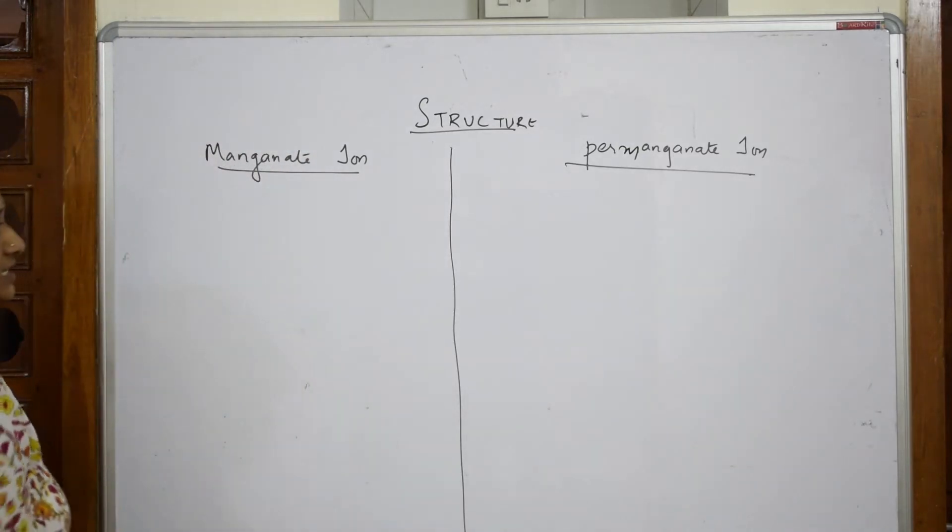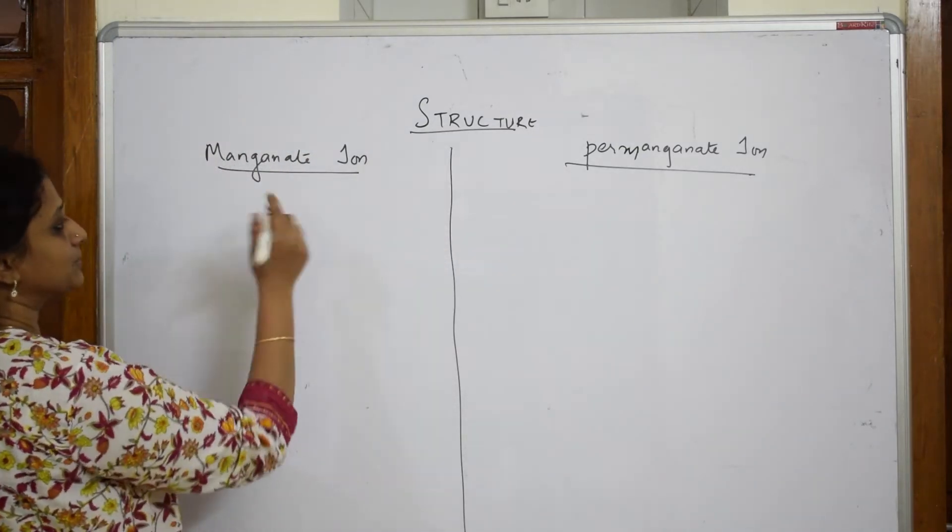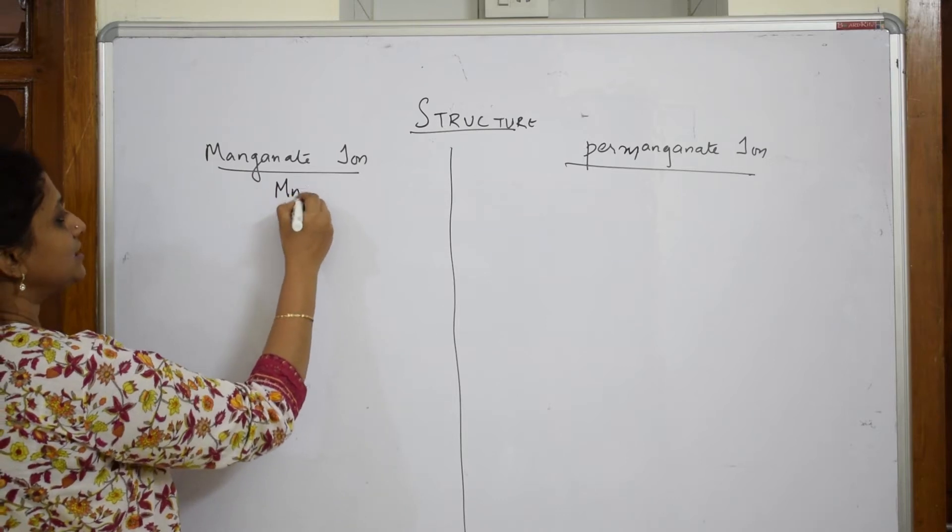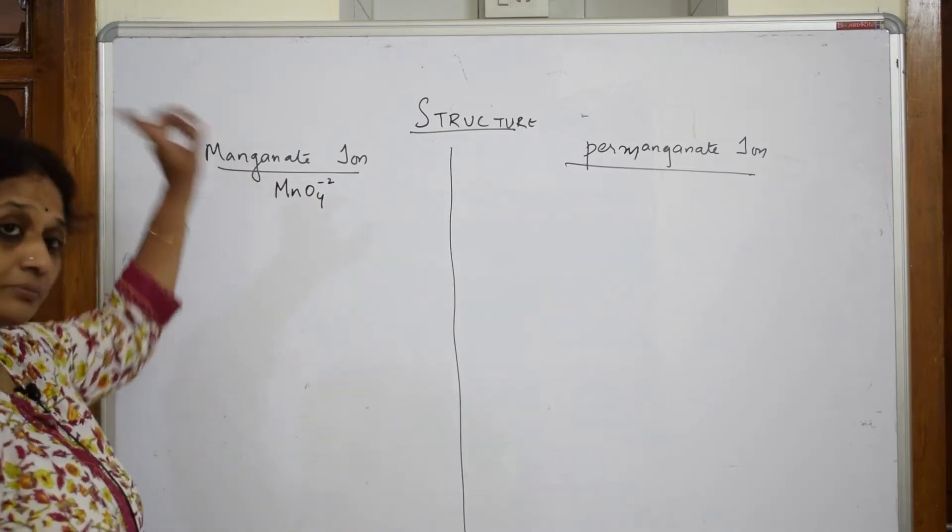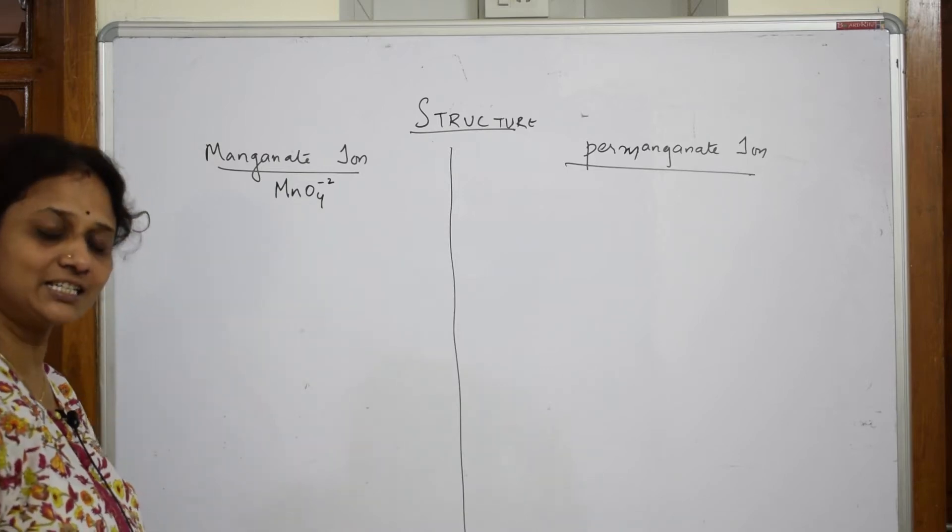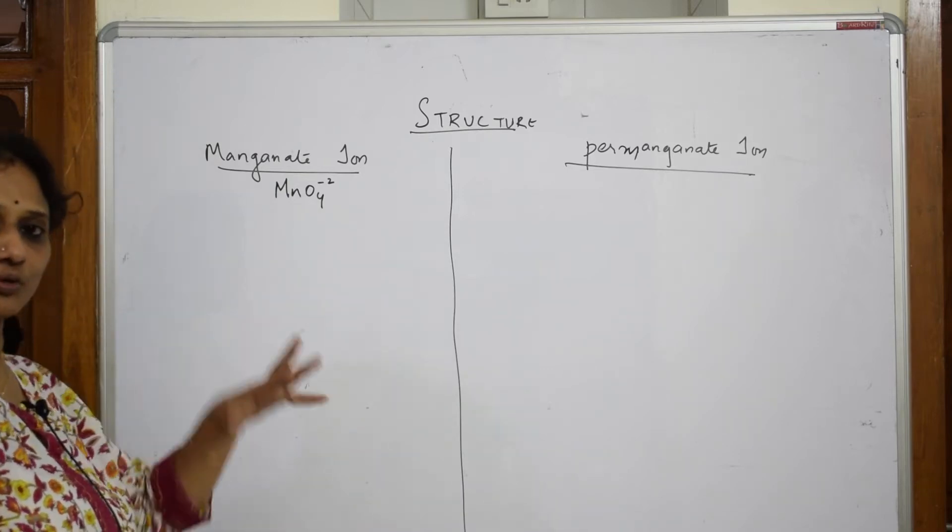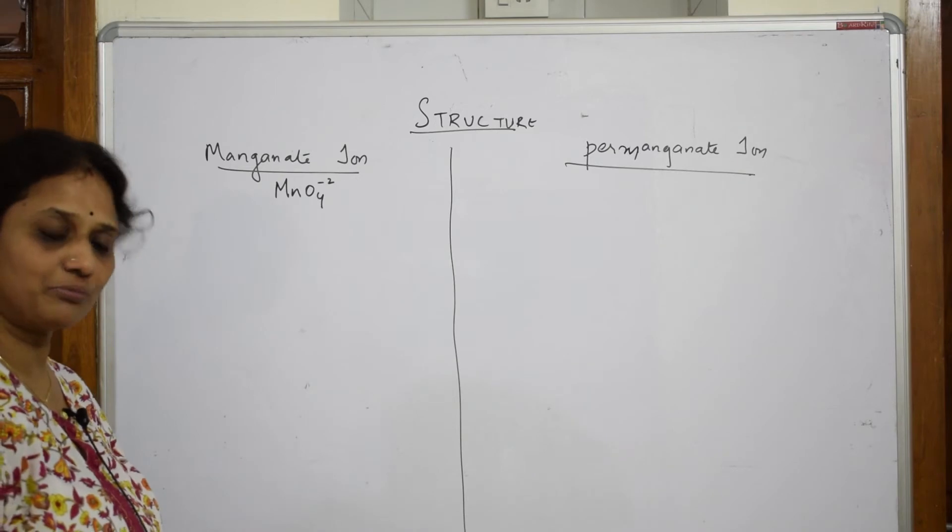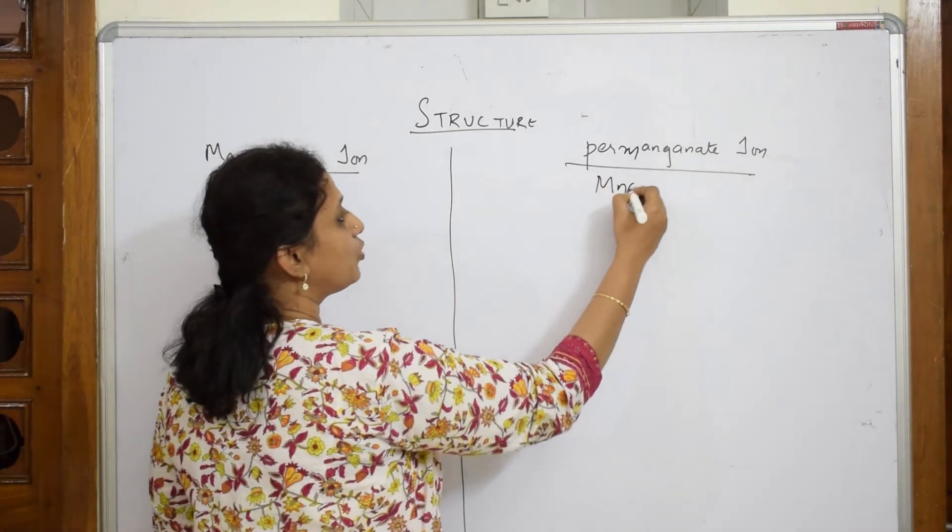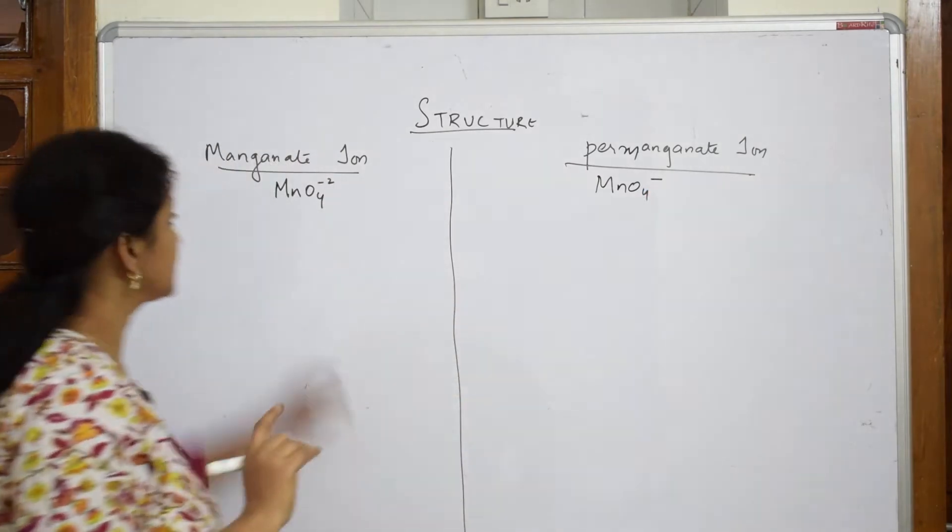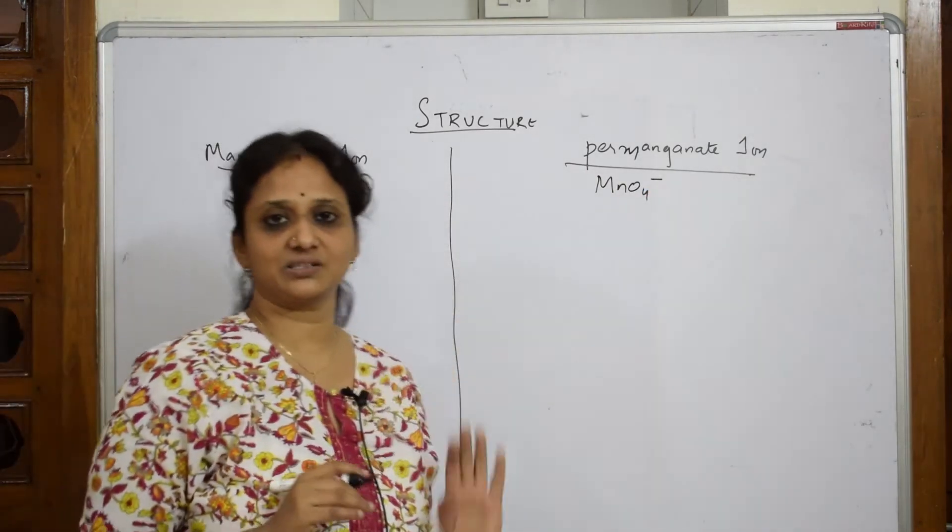Whenever I say manganate ion and permanganate ion, simple important thing. Manganate is MnO4^2- because we have got it from potassium manganate, K2MnO4, where we have broken into 2K+ and MnO4^2-. Permanganate is MnO4^-. Remember this, this is minus 2 and this is minus 1.